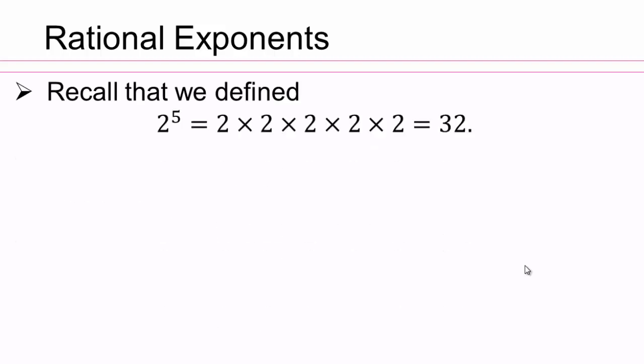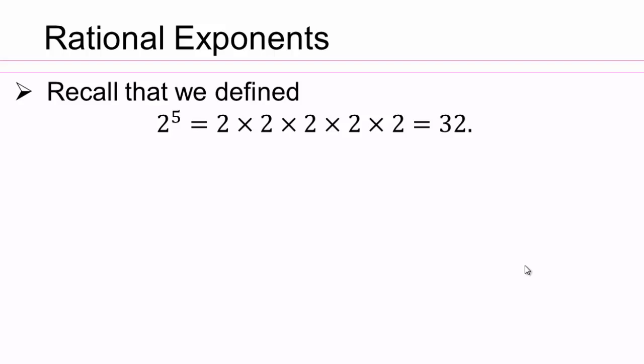Recall that if I wrote 2 to the fifth, that means 2 times 2 times 2, five times. So rational number — can you think of a rational number? Well, 5 is a rational number, but what if I said: can you make sense of 32 to the power 1 fifth?